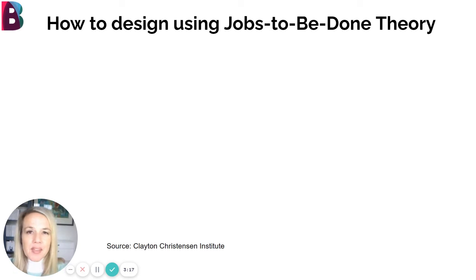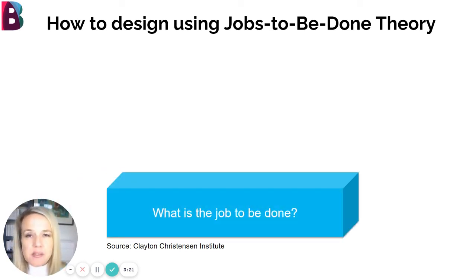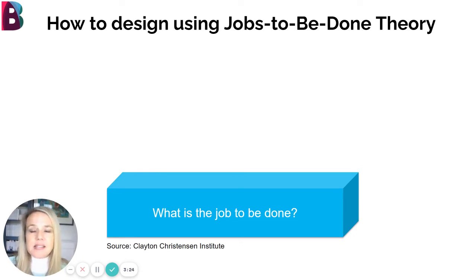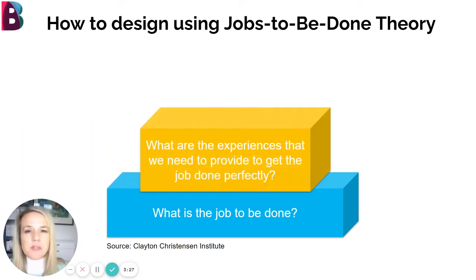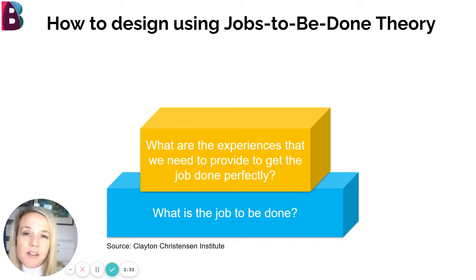So what does this look like in application? First, we want to identify the jobs to be done — we've just done that: feeling like you're making progress every day and having fun with friends. The next step is to think about what are the experiences that we need to provide to get the job done perfectly.